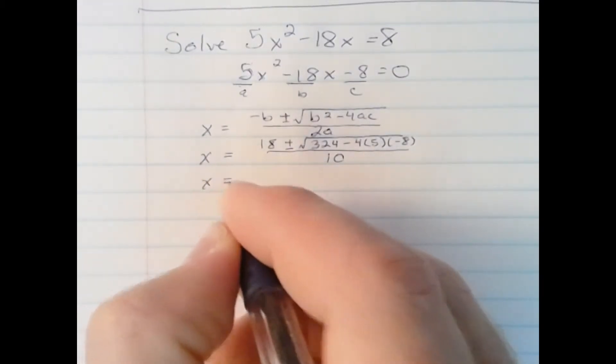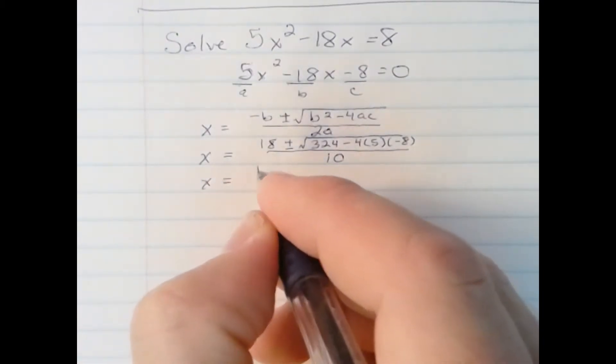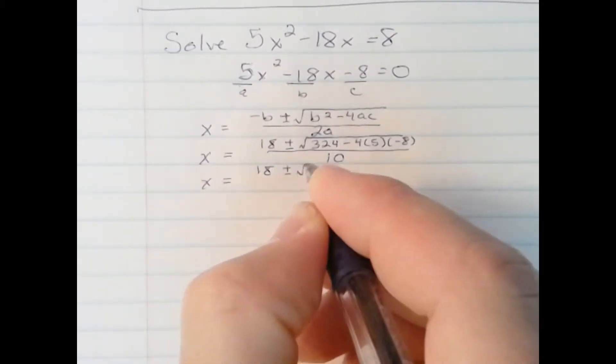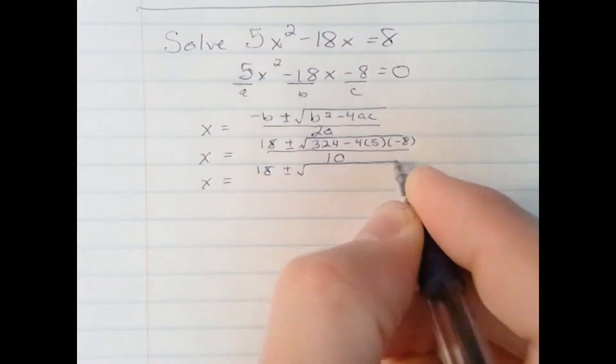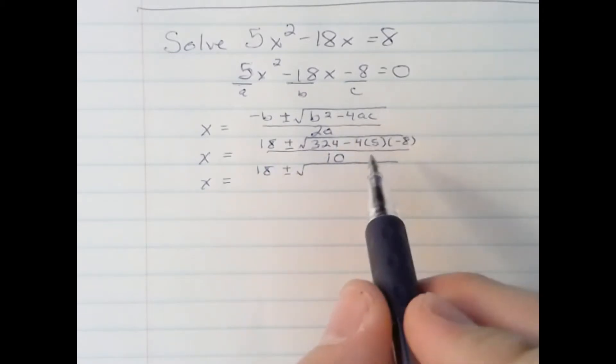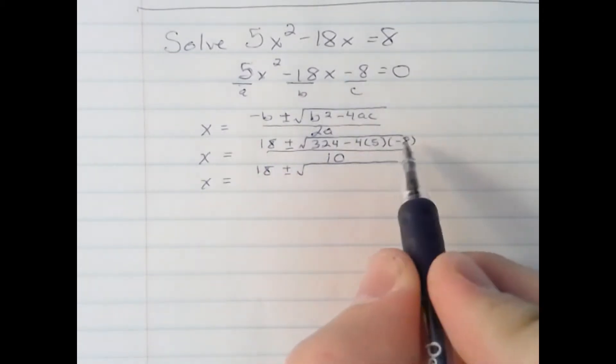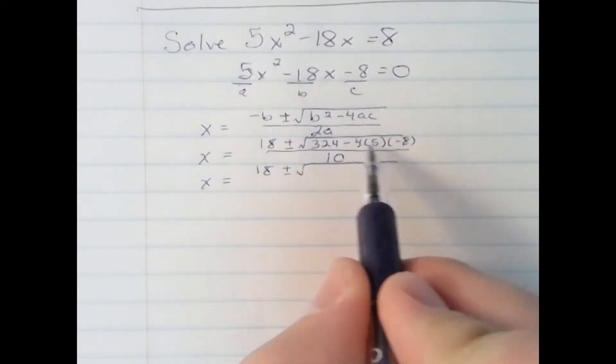Now the next part is simplifying. 18 plus or minus square root... Alright, I have 324 minus 4 times 5 times negative 8. If I do 4 times 5, I get 20.